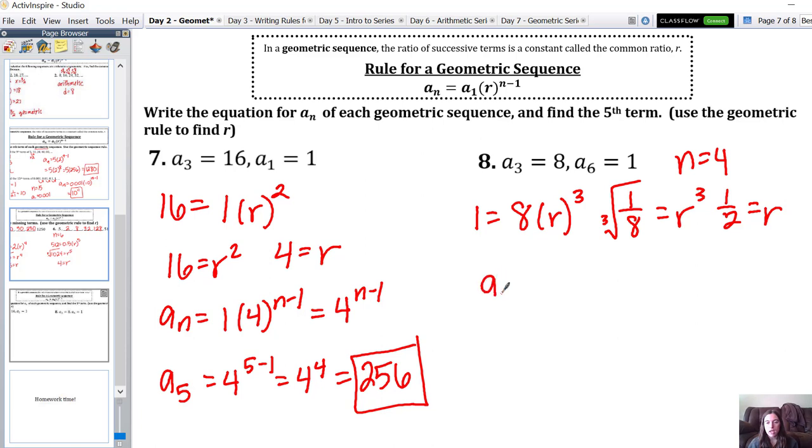So our general equation would be a sub n equals... Now we don't know a sub 1. So to find a sub 1, I'm going to work backwards from a sub 3. Since to go forward, I would be dividing by 2. So to go backward, I'm going to multiply by 2. So a sub 3 times 2, 8 times 2 is 16, 16 times 2 is 32. That means my a sub 1 is 32. So now I have 32 times 1 half to the n minus 1.